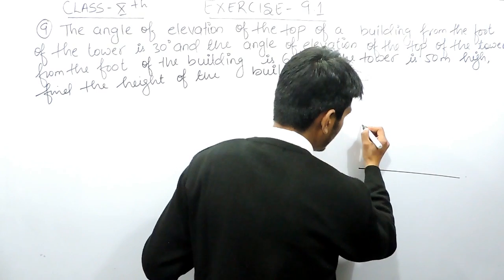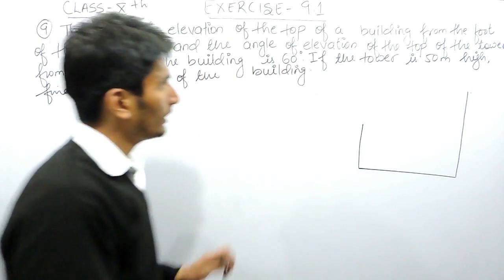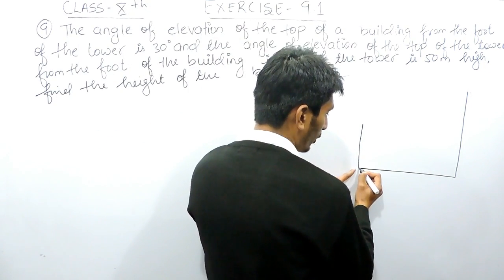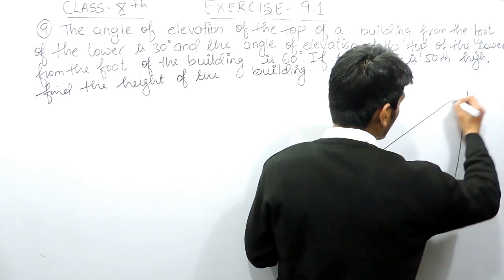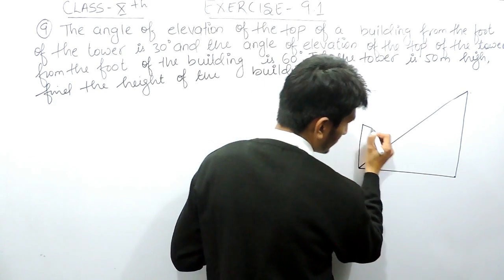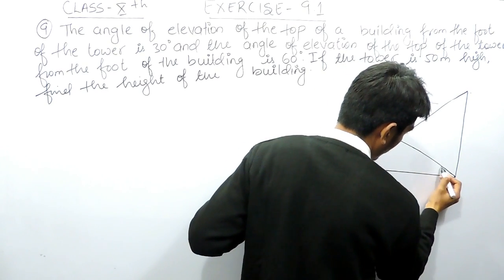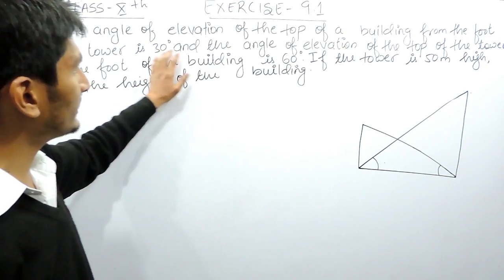This is horizontal ground and there are two things: one is the tower and the second is the building. In the first case, it is given that the angle of elevation of the top of the building from the foot of the tower is 30 degrees — meaning if I look from the bottom of the tower to the top of the building, the angle of elevation is given. Similarly, from the foot of the building looking to the top of the tower, the angle of elevation is also given.